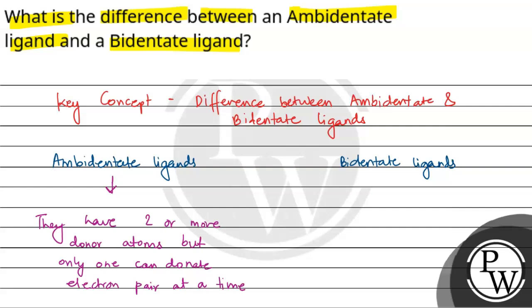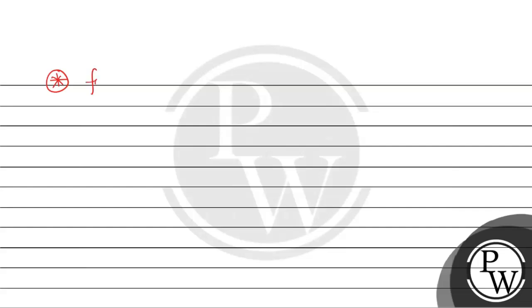Bidentate ligands, on the other hand, have two donor atoms which can attach to a single metal ion or atom. Ambidentate ligands can form only one bond with the central atom at a time.